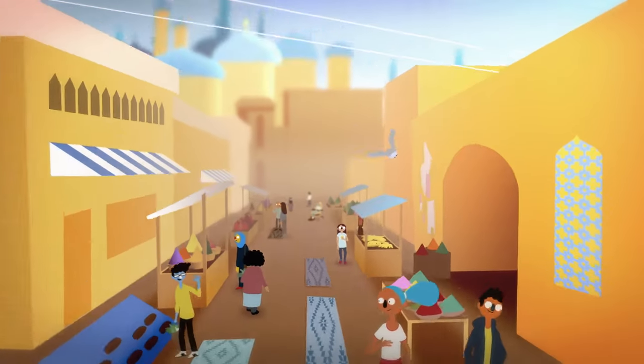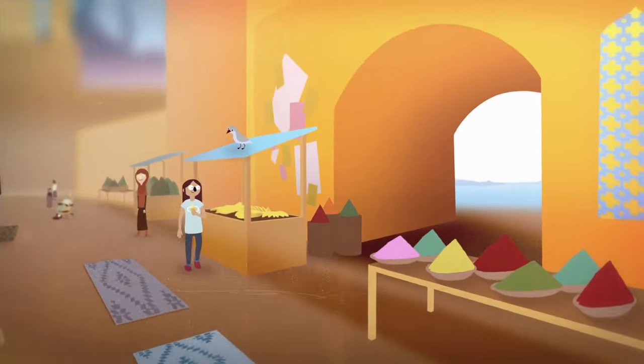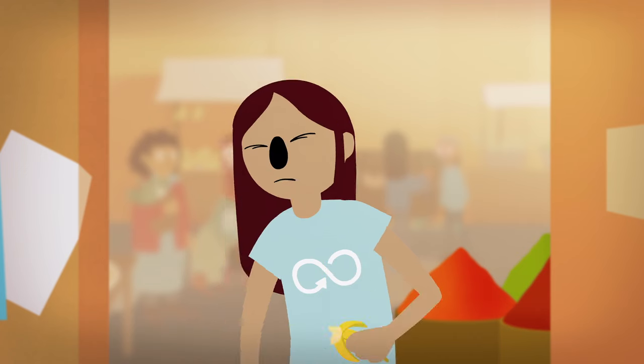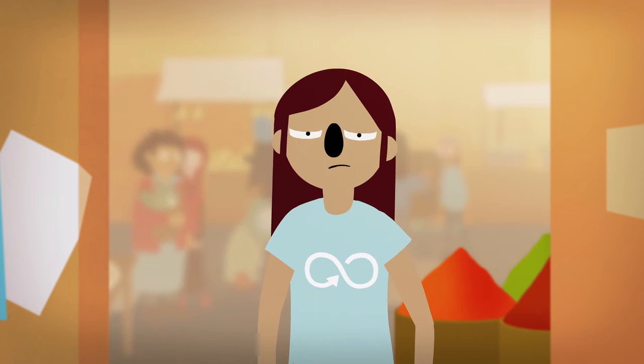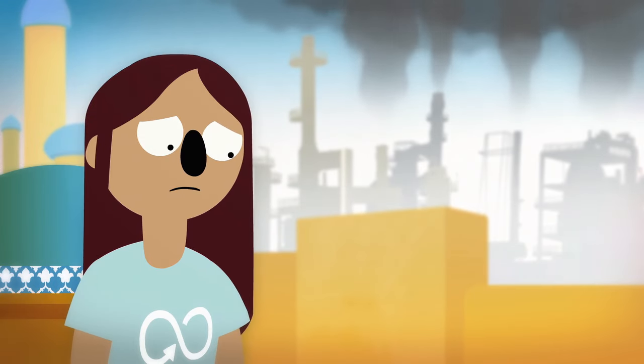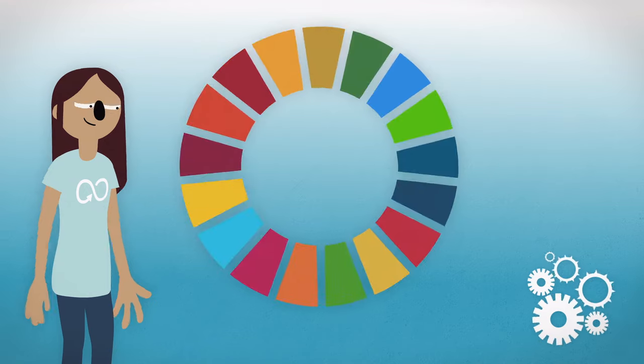First stop is Istanbul in Turkey, where we meet Elif. She's an inventor. Like many big cities, there's a lot of pollution in Istanbul. Some caused by petroleum-based plastics. Elif wasn't happy about that, and wondered what she could do.